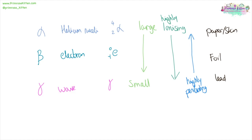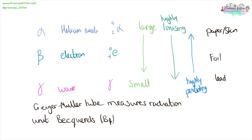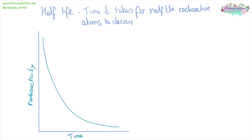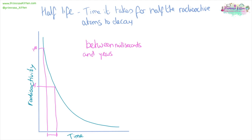A Geiger-Müller tube will measure radiation — it generally clicks every time it detects radiation. The unit for radiation is the becquerel. A half-life is the time it takes for half the radioactive atoms to decay into something else. We can use a graph: take 100% and 50%, read across with a ruler and down. The time between it having 100% activity and 50% activity is the half-life. The half-life of something can range between very quick milliseconds to thousands or hundreds of years.